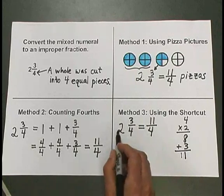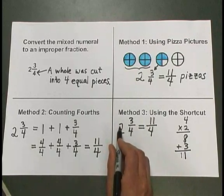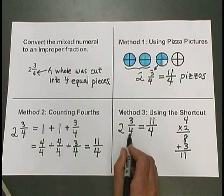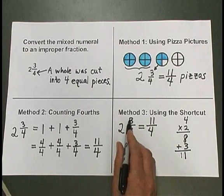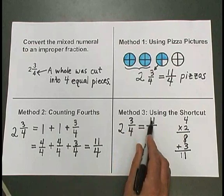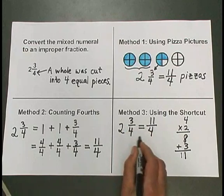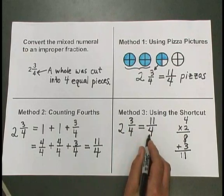So again, the shortcut method involves taking 2 times 4, which is 8, plus 3 on top to get 11. And we recopy exactly the same denominator, 4.